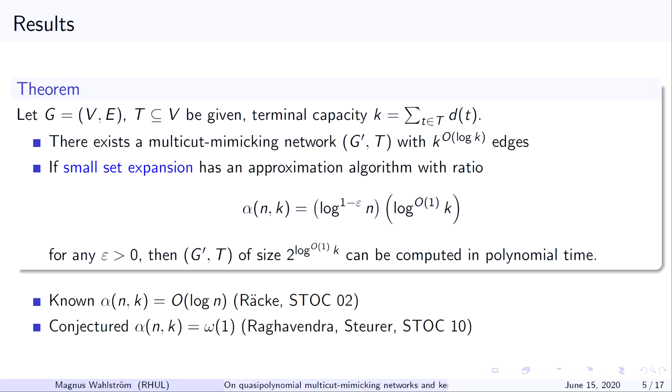A very quick note. The best known upper bound on this approximation ratio is exactly log n, which is, as you see, just above the threshold where it's useful to us. There is a conjectured lower bound, which says you probably can't do constant factor, but nobody has ever conjectured and there is no way to exclude that they could exist, for example, the square root log n or log k as approximation ratio.